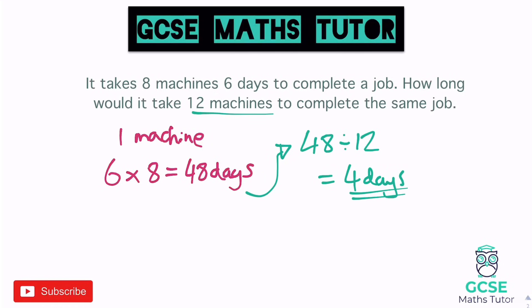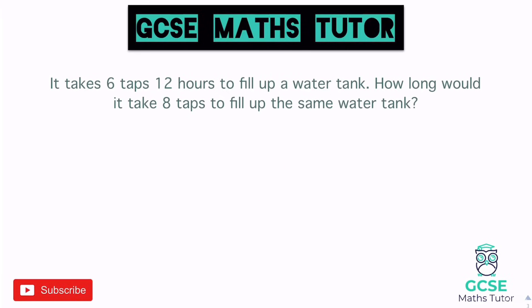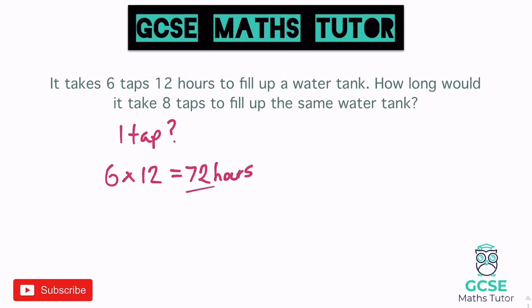One more example: it takes six taps 12 hours to fill up a water tank. How long would it take eight taps to fill the same tank? More taps — logically it's going to take less time. So if six taps take 12 hours, how long would one tap take? Six times 12 gives us 72 hours for one tap.